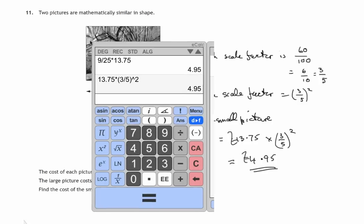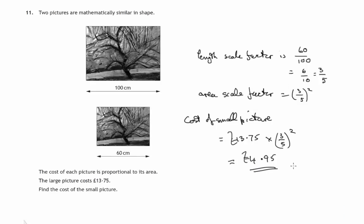So there's two different methods of finding the cost of the small picture.